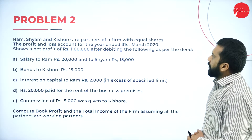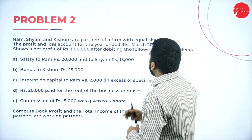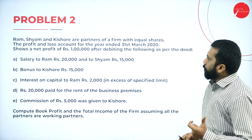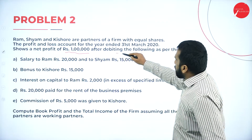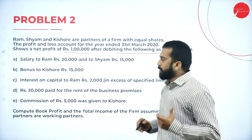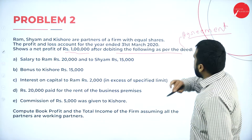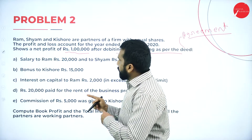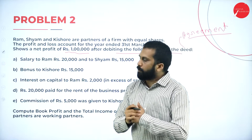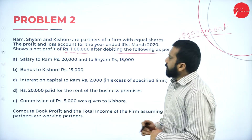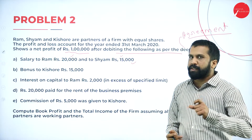Ram, Shyam, and Kishore are partners of a firm with an equal share. The profit and loss account for the year ended 31st March 2020 shows a net profit of 1 lakh. Your calculation starts from 1 lakh, after debiting the following as per the deed — deed means agreement. Whatever information they have given, we have to add back. Salary to Ram is 20,000 and Shyam is 15,000, so that is 35,000.